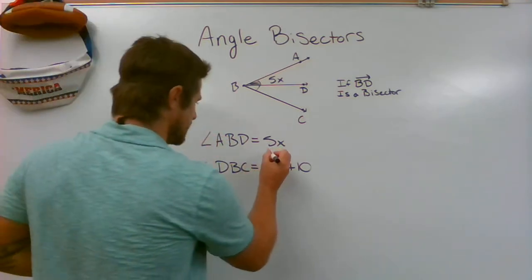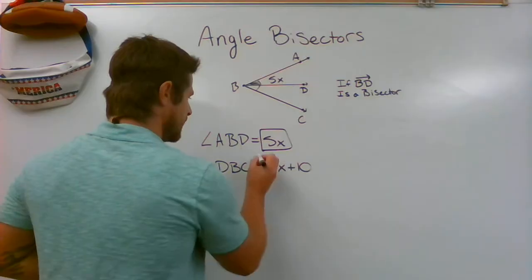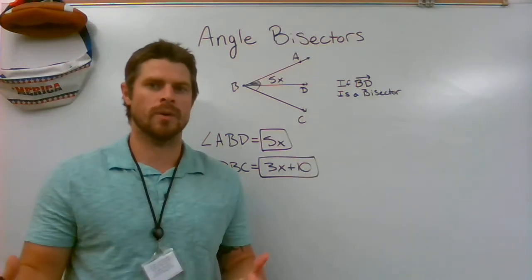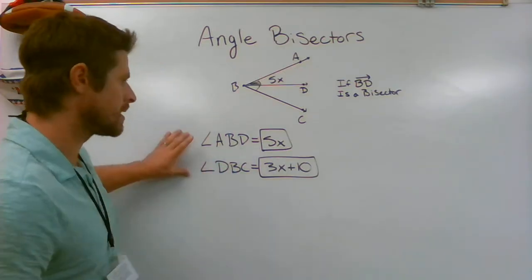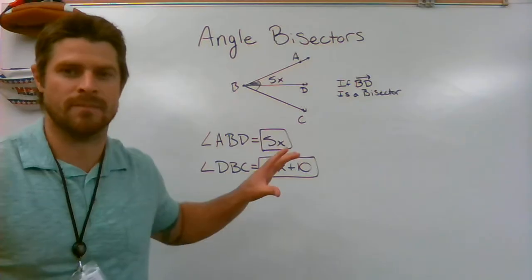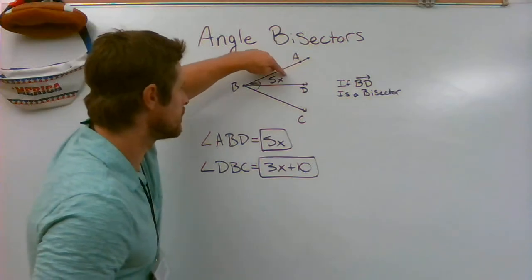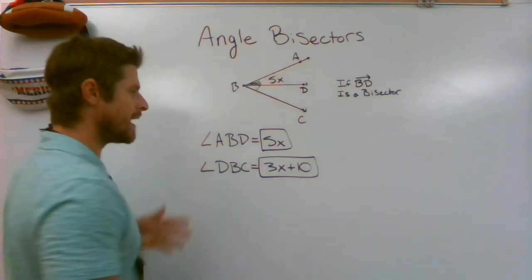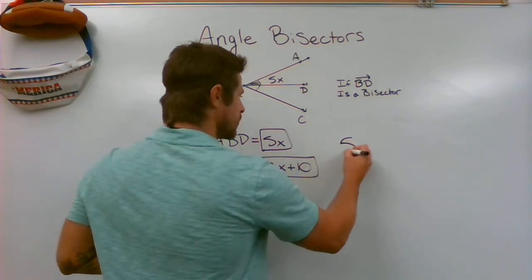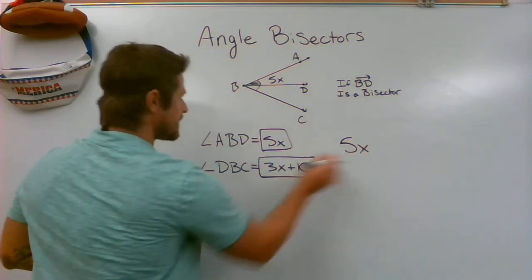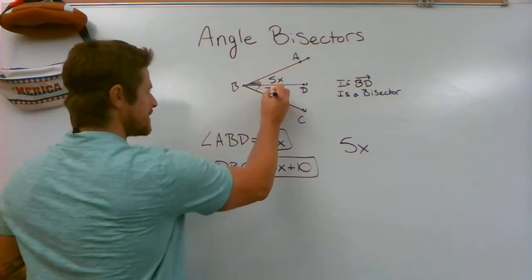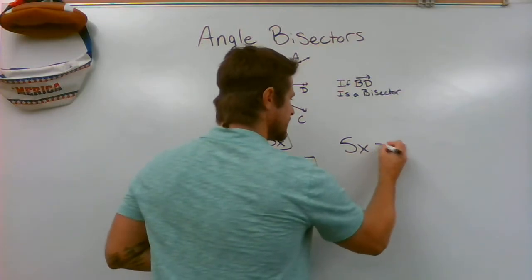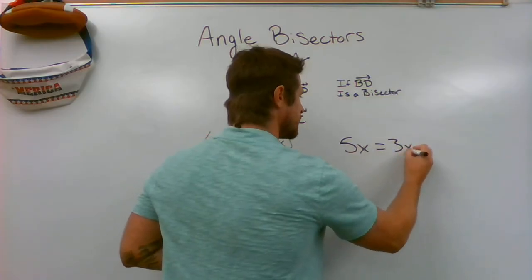I'm going to take this expression and this expression, and I have to ask myself, what do I know about those two given angles? I know they're the same. I know that this angle is the exact same as this angle. How do I say that in algebra? That equal sign says that 5x is the same as 3x plus 10.